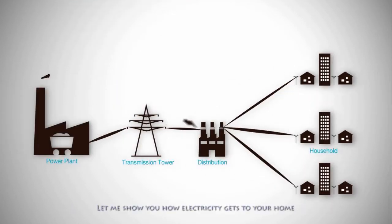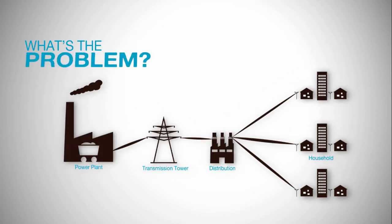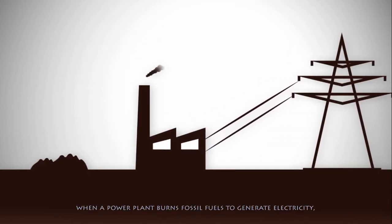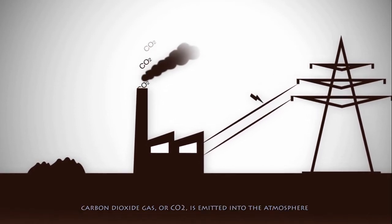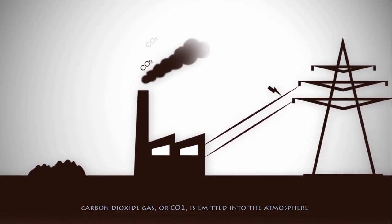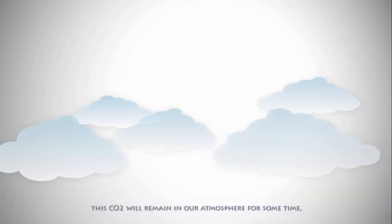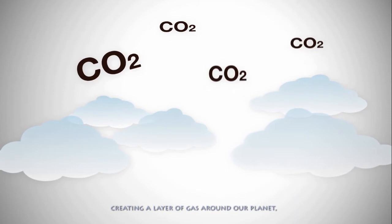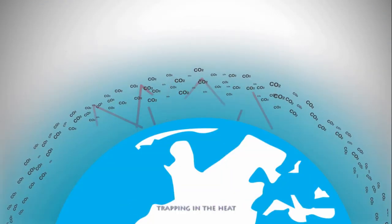Let me show you how electricity gets to your home. When a power plant burns fossil fuels to generate electricity, carbon dioxide gas, or CO2, is emitted into the atmosphere. This CO2 will remain in our atmosphere for some time, creating a layer of gas around our planet, trapping the heat.